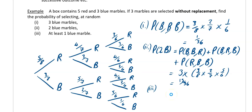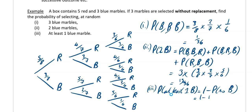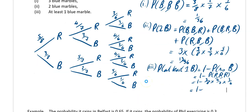The last part says at least one blue marble. At least one blue means I could have one, two, or three blues — anything except no blues. So it's 1 minus the probability of no blues. No blues means red, red, red: 1 − (5/8 × 4/7 × 3/6) = 1 − 5/28, which works out to 23/28.